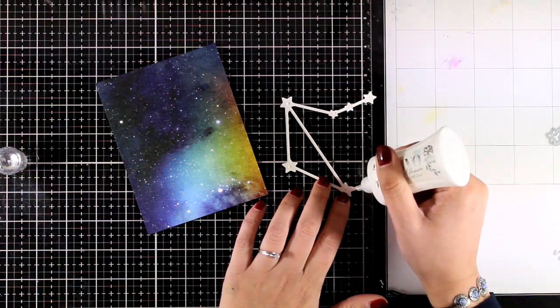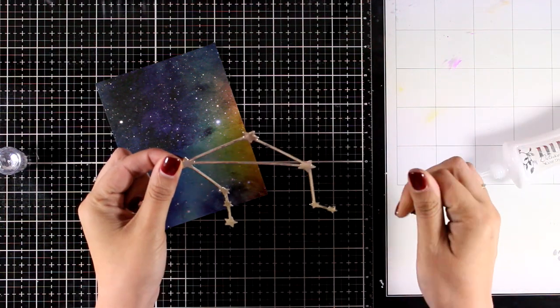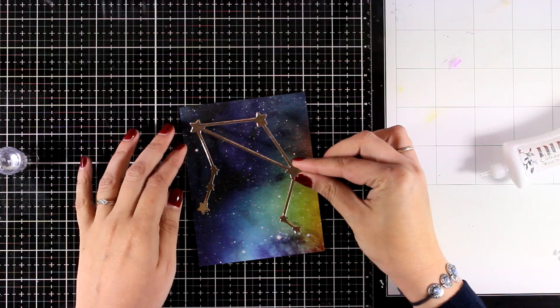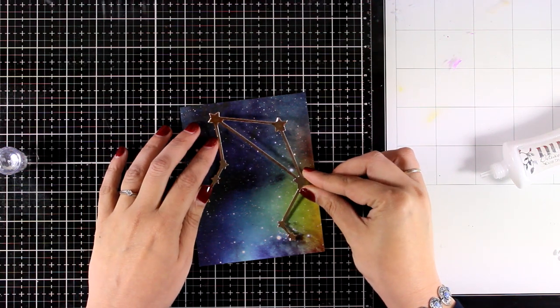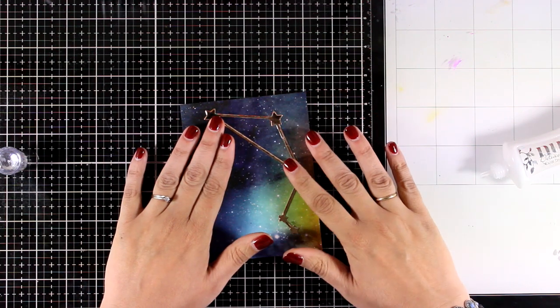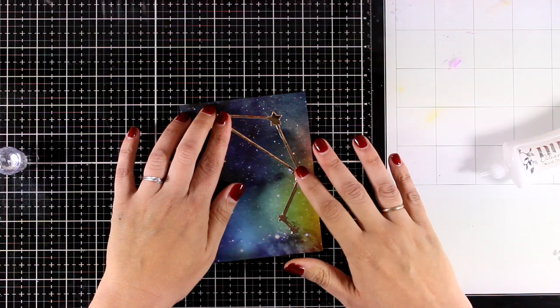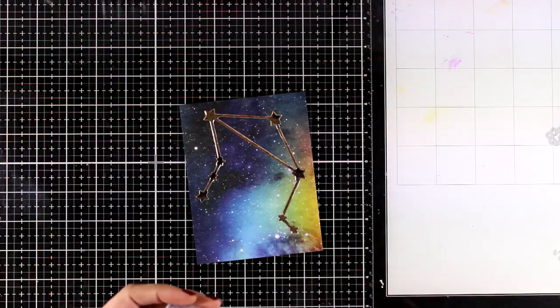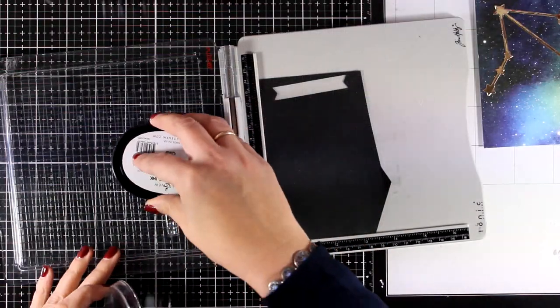Now all I have to do is stick my cutout down. I'm using for that some Nuvo Deluxe adhesive at the back. I'm going to place it on top. Just like I said in the beginning, this is a super quick card but I think it makes a great impact. I love that I got to use my white washi tape again. I think this is a great card to recreate easily and it's perfect for both boys and girls.